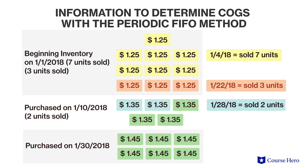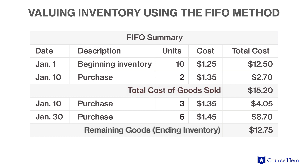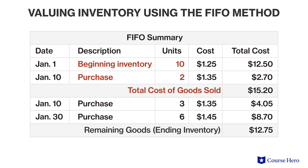By the time the next sale of three units occurs on January 22nd, there are eight units in inventory — three remaining from beginning inventory and five from the purchase on January 10th. Since the company is using FIFO, the oldest three units are deemed sold first: the ones from beginning inventory at $1.25 each. Therefore, by the time the sale of two units on January 28th is made, the oldest units are the ones purchased on January 10th at $1.35 per unit. The cost of goods sold under FIFO comprises all beginning inventory units and two units from the January 10th purchase. The remaining three units from January 10th and the goods purchased on January 30th remain in ending inventory.